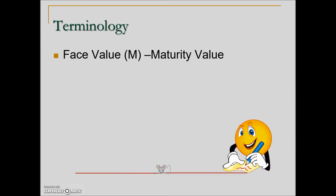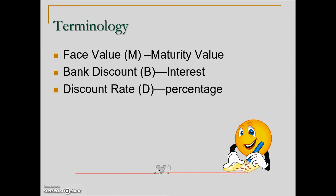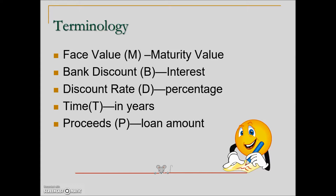Here is a listing of the terms specific to a discount note. The face value is the maturity value. The bank discount, represented with the letter B, is the interest. The discount rate is the percentage represented with D, and time is in years, just like when calculating simple interest. Proceeds are the loan amount.